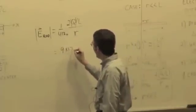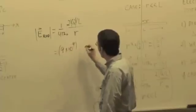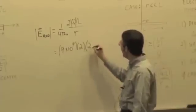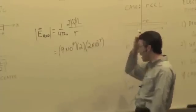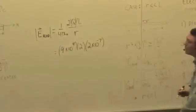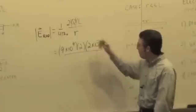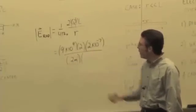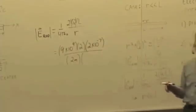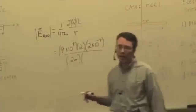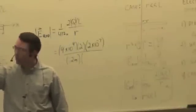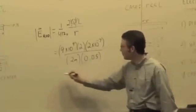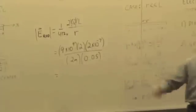So we have 9 times 10 to the 9th times 2 times the charge of 2 times 10 to the minus 7. Yeah, I know it's negative, but we're just looking for the magnitude. Divided by L, so the length is 2 meters. And what's R? Is it 0.03 or 0.05? 0.05.